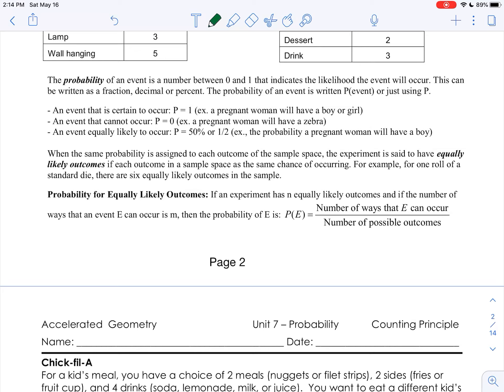So the sample space, if the sample space is represented by outcomes that are all equally likely to occur, then, for example, if we're rolling a die, there's six equally likely outcomes.